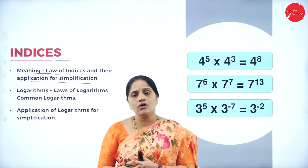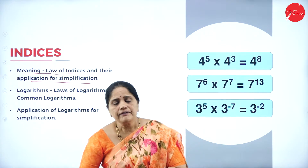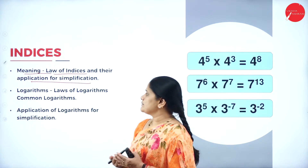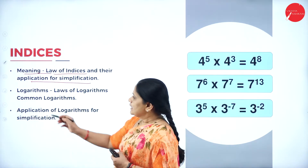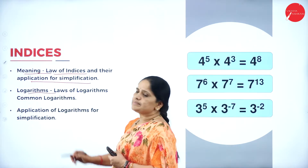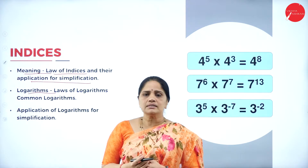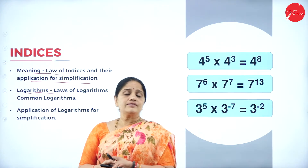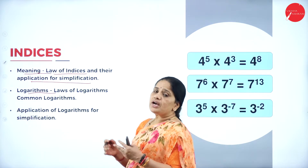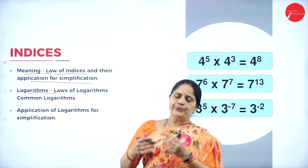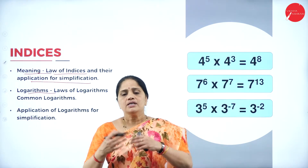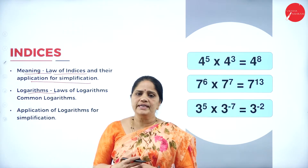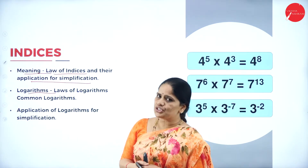We have almost 6 laws for indices and their application for simplification. Based on the 6 laws of indices, we will be working out problems and simplifying them. Then, next is logarithms. Logarithms means a shortcut for arithmetic. Suppose you have very big numbers and you don't know how to add or subtract them. With the help of log tables, we can always do addition, subtraction,